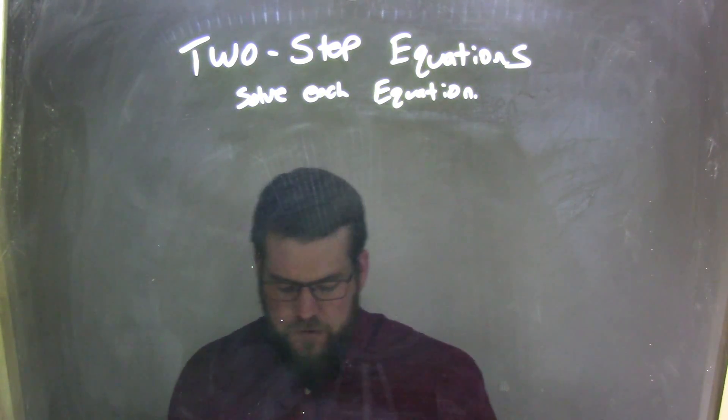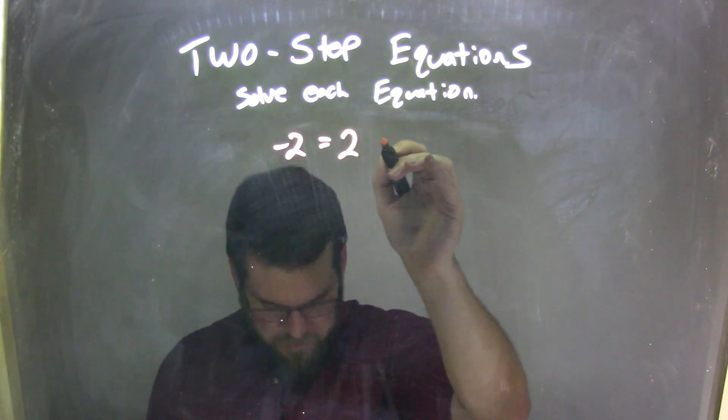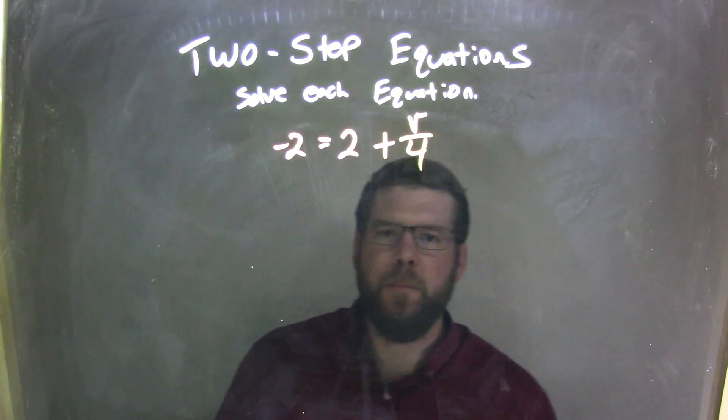So if I was given this equation, negative 2 equals 2 plus the letter v over 4, okay?